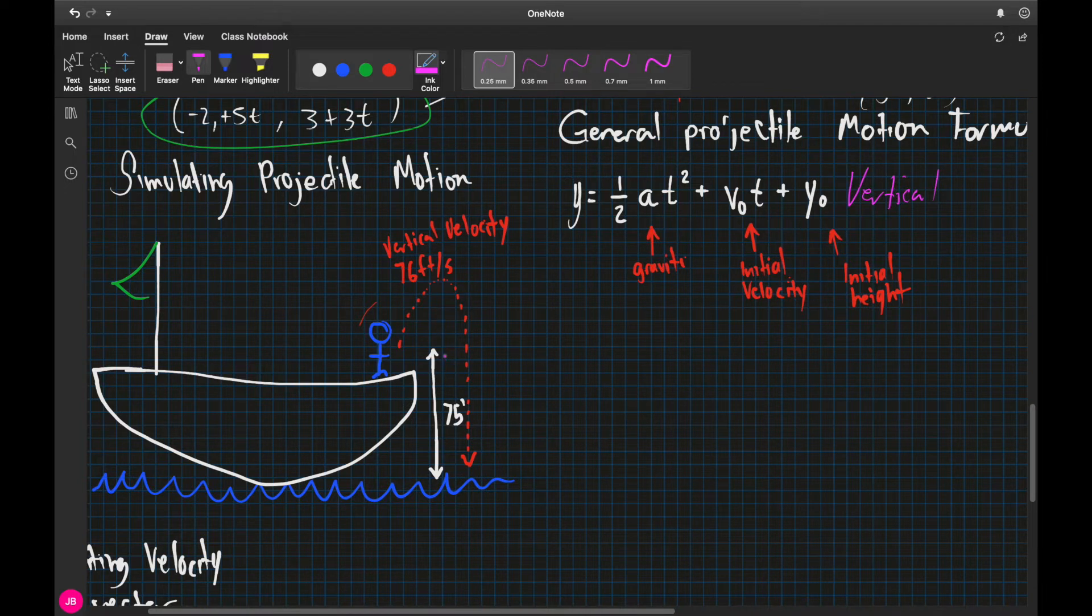For this first problem, there's this guy on the ship. He has launched a flare from the deck ship that is 75 feet above the water. This flare has happened to go up with an initial vertical velocity of 76 feet per second. And they want us to go ahead and graph the flare's path along this vertical position with terms of seconds.